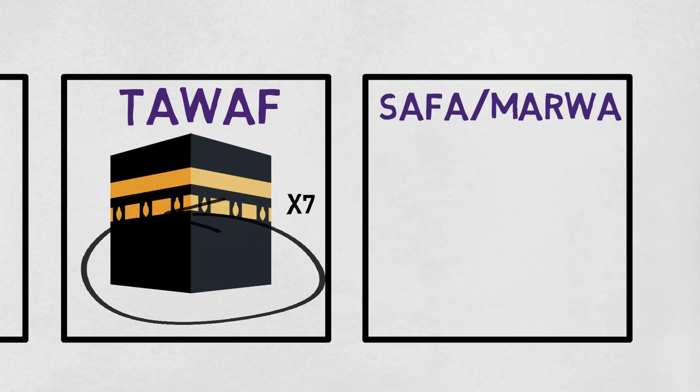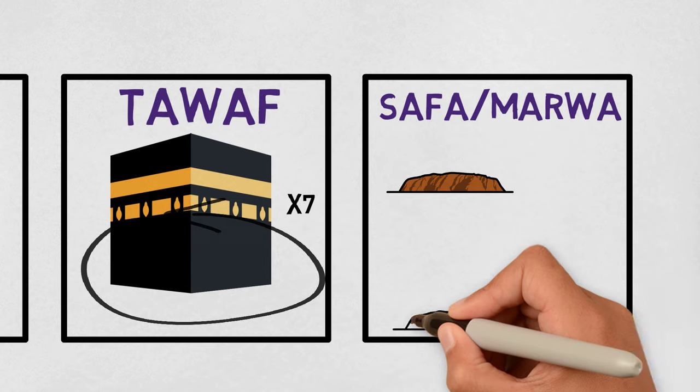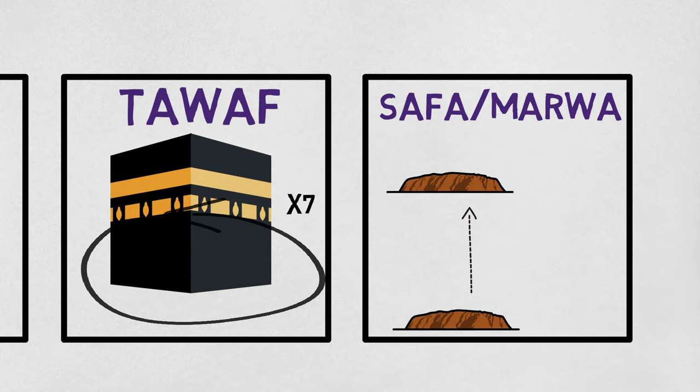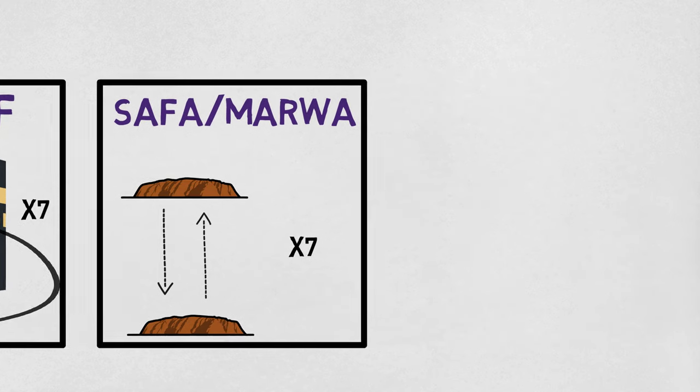Near the Kaaba are two small hills called Safa and Marwa. Long ago, these small hills were big mountains. The pilgrims must walk between these two hills seven times.